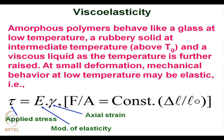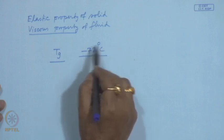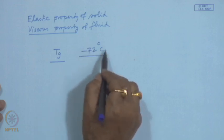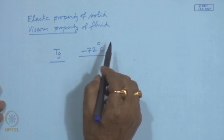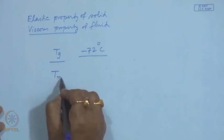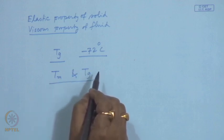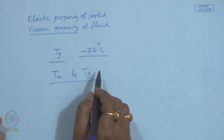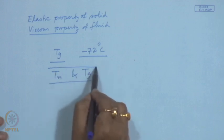The Tg of natural rubber is around minus 72 degrees Celsius, and liquid nitrogen temperature is much below that. So at that temperature it becomes brittle like glass; the amorphous rubber in the ball becomes glass-like and breaks below the glass transition temperature. It is a rubbery solid at intermediate temperature above Tg, and a viscous liquid as temperature is further raised. Between melting temperature Tm and Tg it behaves like a flexible, soft material.